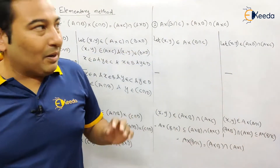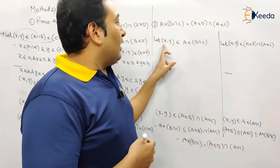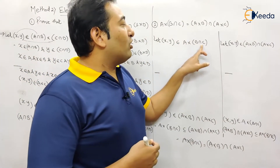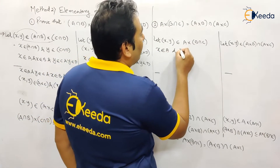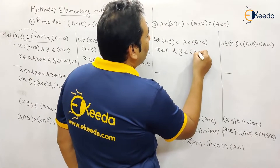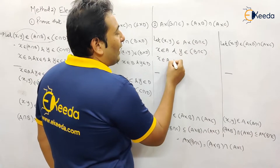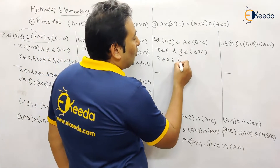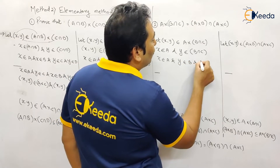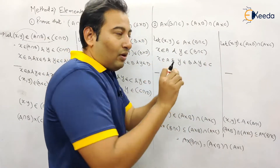Let's start with the next example. I'm taking two examples in the same video so that any doubts will be cleared. x comma y belongs to A × (B∩C). What does this mean? This means x belongs to A and y belongs to B∩C. Since y belongs to B∩C, that means y belongs to B and y belongs to C. So we broke down all terms individually.